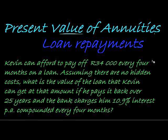These questions are pretty standard and simple, but let's do one as an example. Kevin can afford to pay off $34,000 every four months on a loan. Assuming there are no hidden costs—which would mess up these calculations—what is the value of the loan that Kevin can get if he pays it back over 25 years and the bank charges him 10.9% interest per annum compounded every four months?